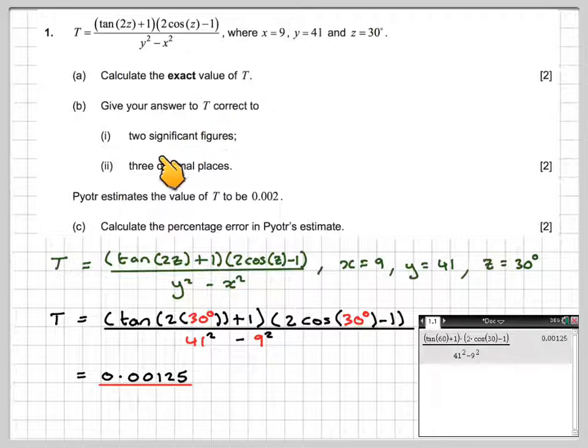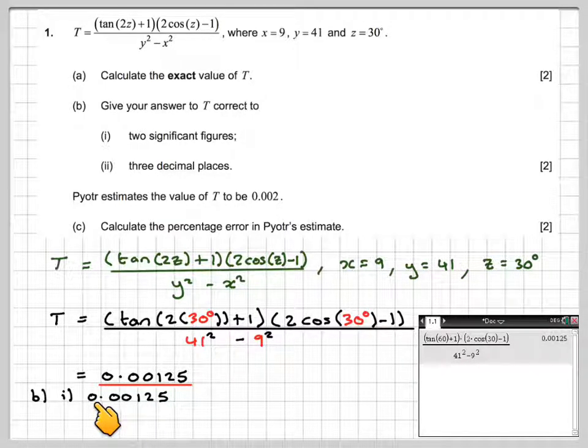Then it says, give your answer T correct to two significant figures and three decimal places. So, 0.00125. When considering significant figures, these first three zeros are not significant. So the first significant figure is 1, the second is a 2, and the third is a 5.